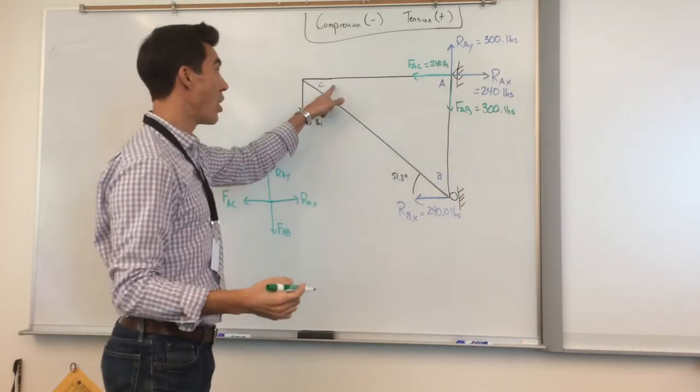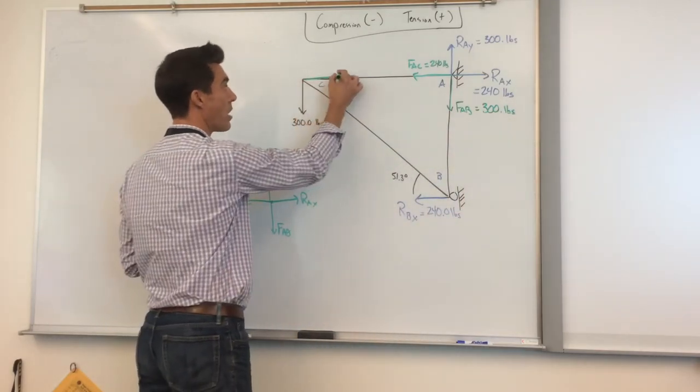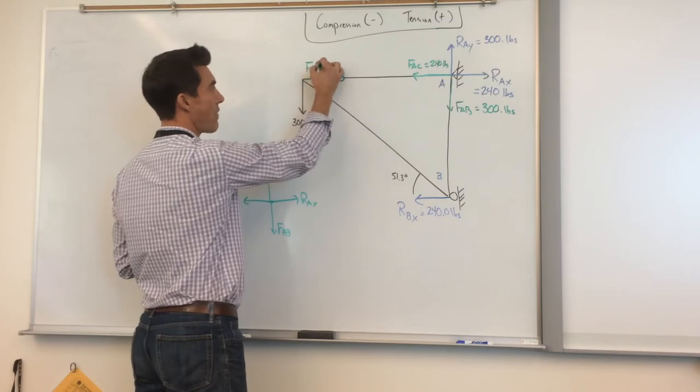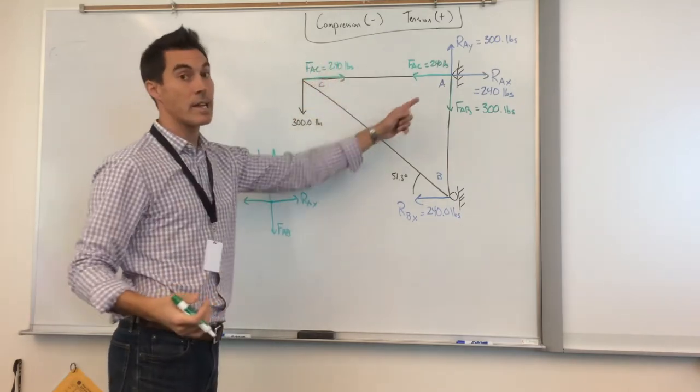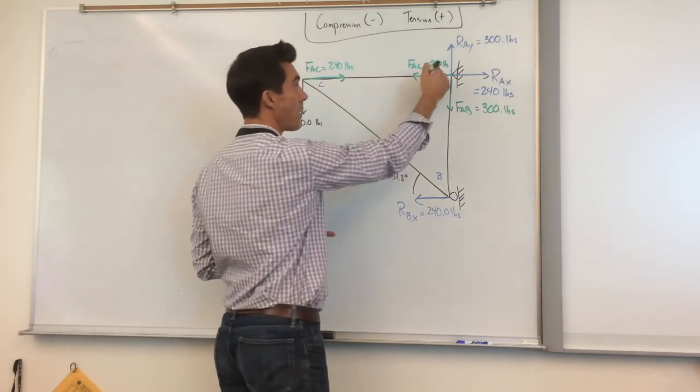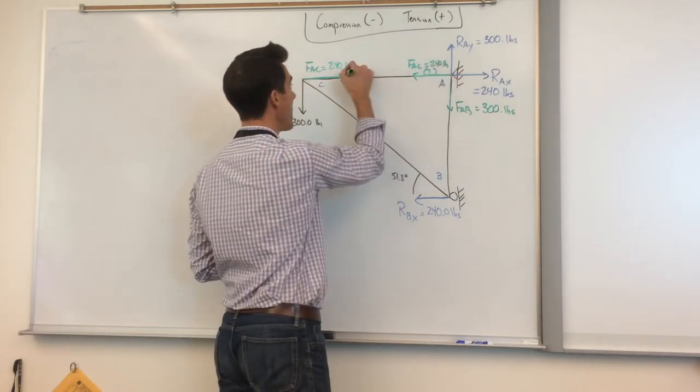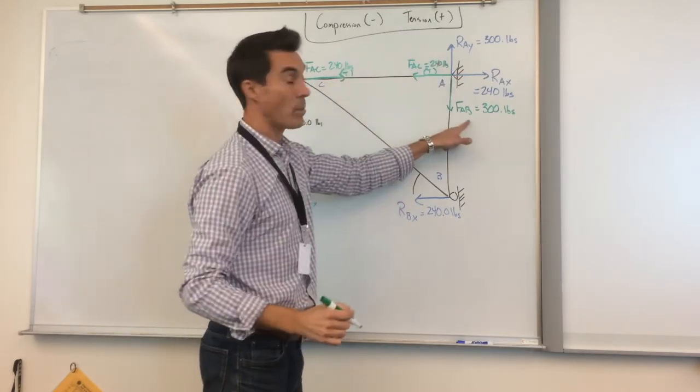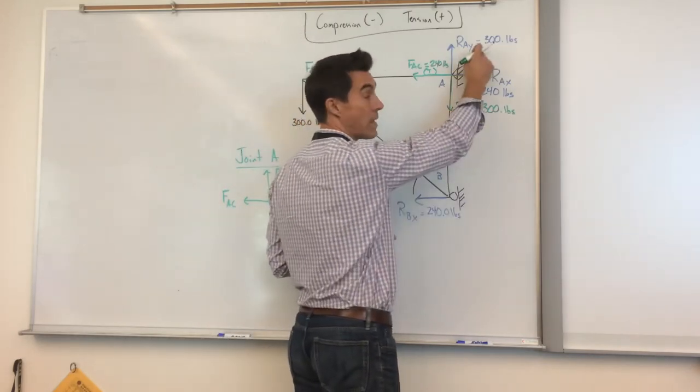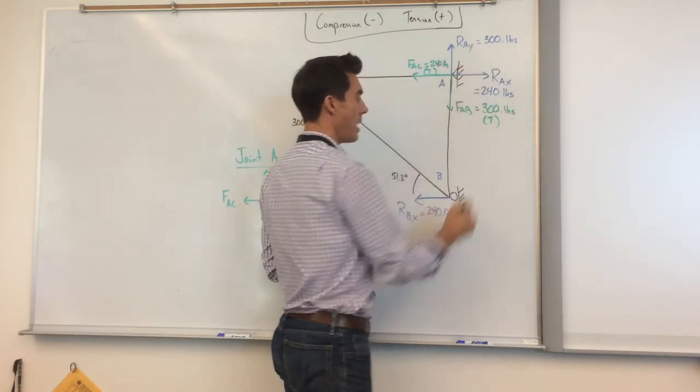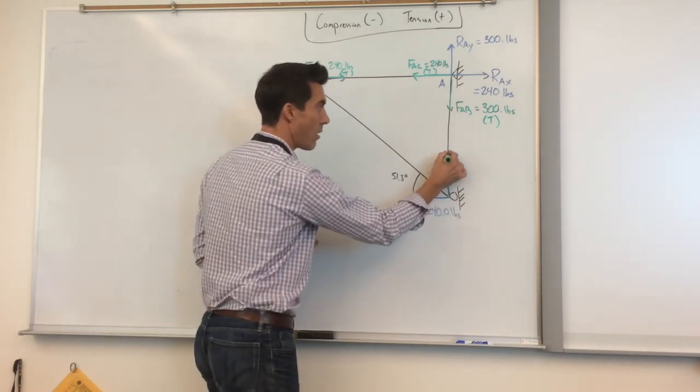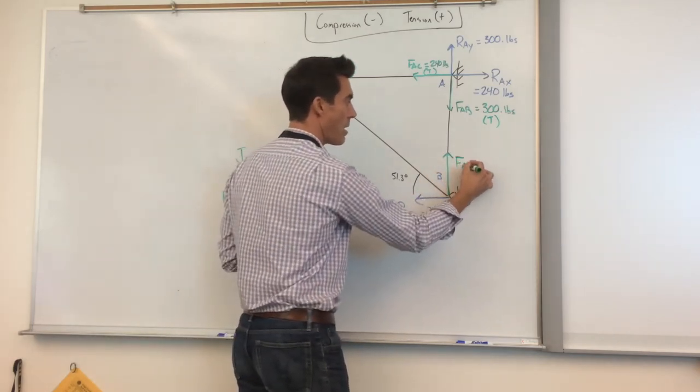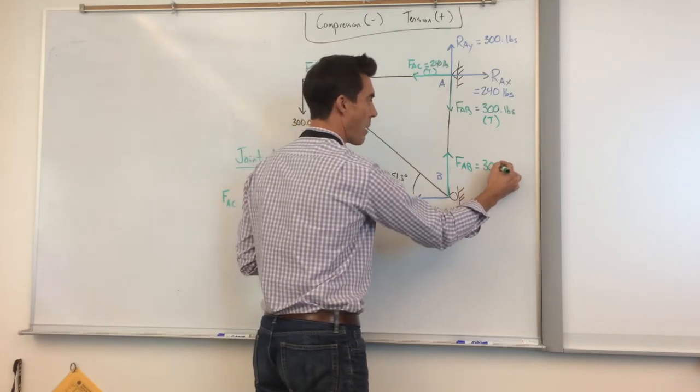Now because we know that, we can put that over here for C. So FAC is also equal to 240 pounds. And because these arrows are directed inward, specifically this one, those are under tension. Same thing with this. Because FAB is directed inward, the opposite of the reaction force, it must also be under tension. We can even draw that down here. And FAB is also equal to 300 pounds.